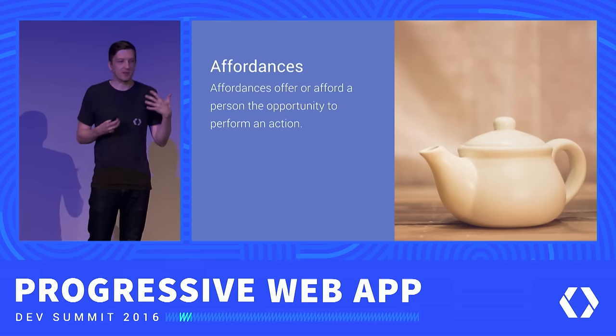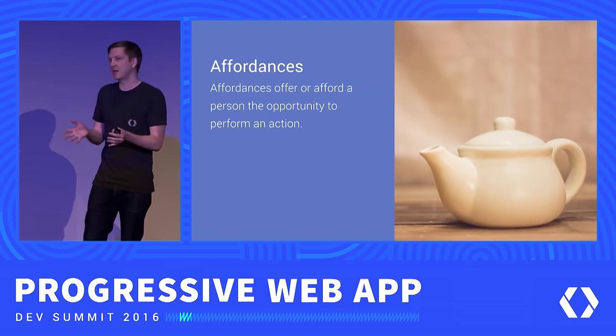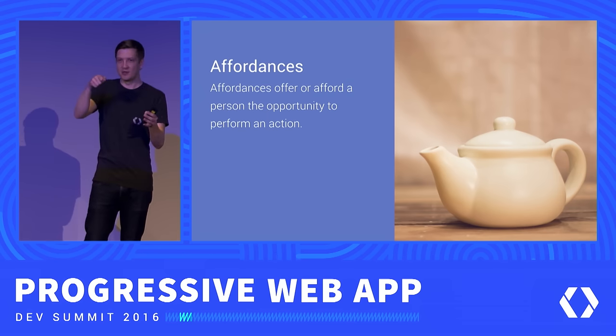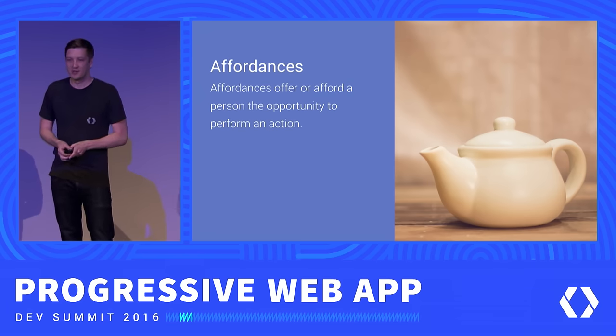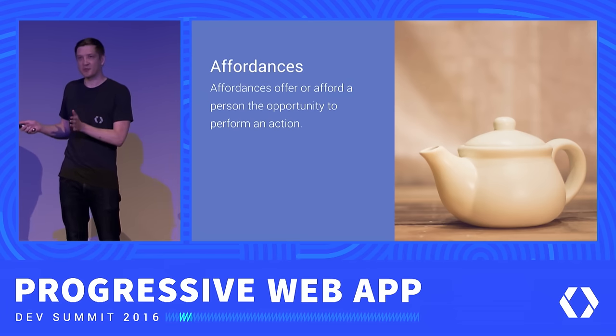To answer this, it helps to think about the idea of affordances. An affordance offers a person an opportunity to perform an action. A teapot is a great example — based on its physical design it has affordances, like a handle. Because I've seen other things with handles, I know I can pick it up and interact with it without anyone explaining how it works. In graphical user interfaces, affordances are more metaphorical — a button is designed to look like a three-dimensional button you might interact with in the real world. The obvious problem is that if someone can't see the screen, they'll miss out on those visual affordances.